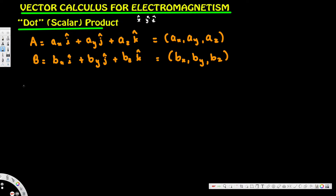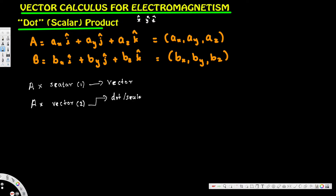There are two ways to multiply a vector function. One way is to multiply with a scalar — when you multiply a vector with a scalar you get a vector. The other way is to multiply with a vector, and one of those methods is called dot product or scalar product. When you multiply two vector functions using the dot product, the vector components cancel each other — since i·i equals one — and you end up with a scalar.